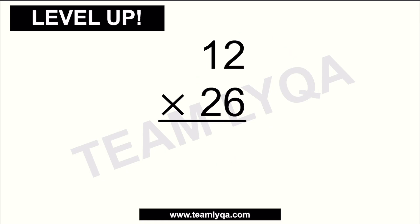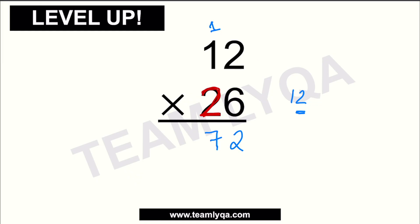Now, what if we have 12 times 26? We're going to focus on the 6 first — ignore the 2 in 26 for now, just focus on the 6. Starting with 2 times 6, same as before, that gives us 12. The 1s digit goes below, and the 1 from the 10s place gets carried up. Next, 1 times 6 is 6, plus the carried 1 is 7. Now that we're done with the 1s digit of 26, we move to its 10s digit, which is 2. You have 2 times 2, which gives us 4. Place it under the 7 — but shift one space over.